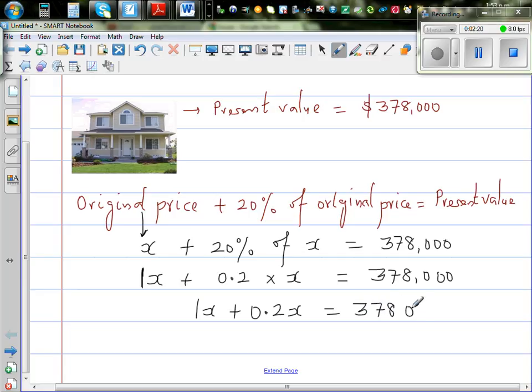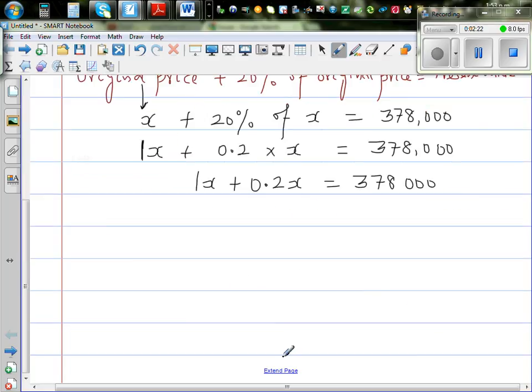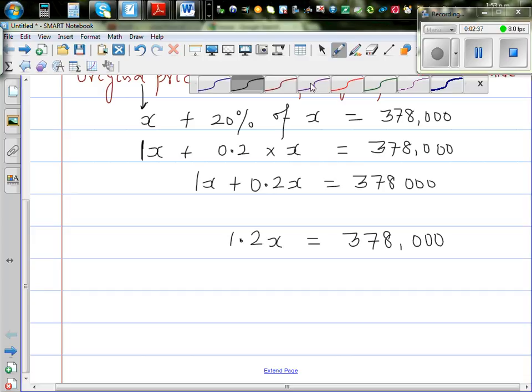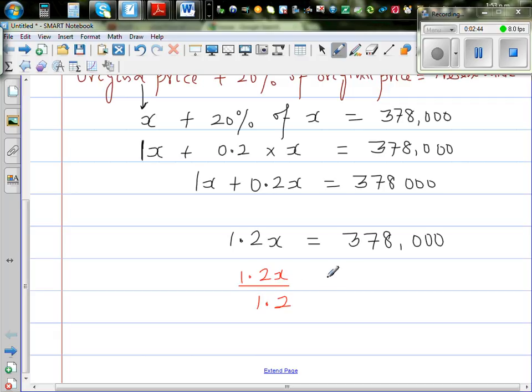So 1X plus 0.2X is 1.2X is equal to 378,000. I want to get X, so I'm going to divide both sides by 1.2. So this is 1.2X divided by 1.2.